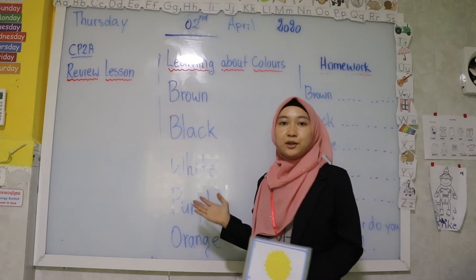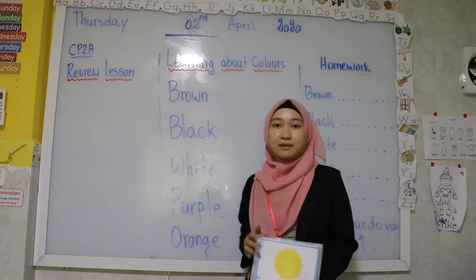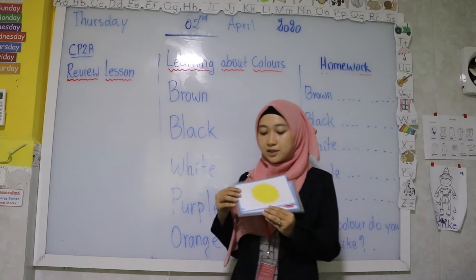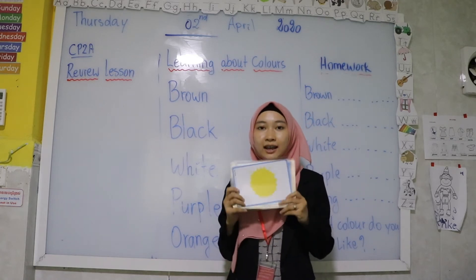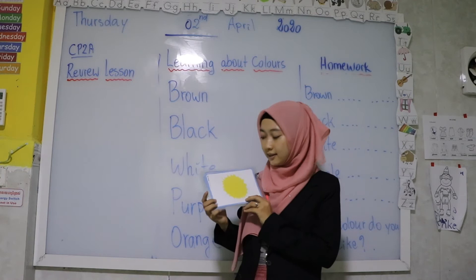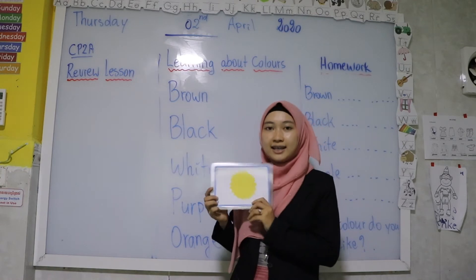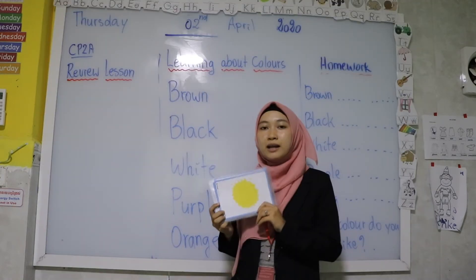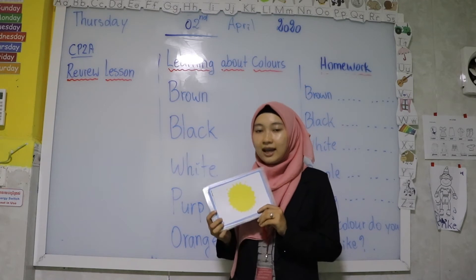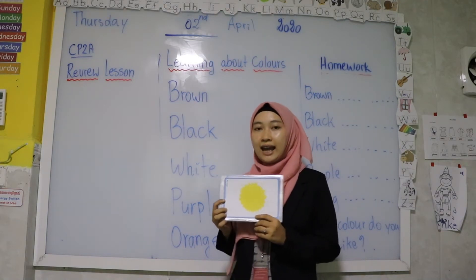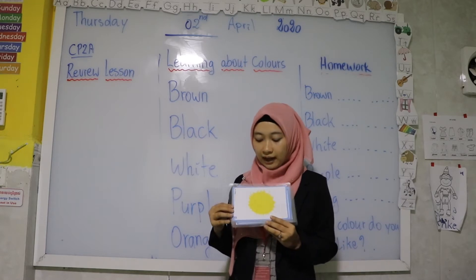Before we start a new lesson, we have to review our lesson first. Everyone, can you guess what is this color? Can you tell me what is this? We have learned already this word. This is yellow. How to spell yellow? Yellow is spelled Y-E-L-L-O-W. Yellow.